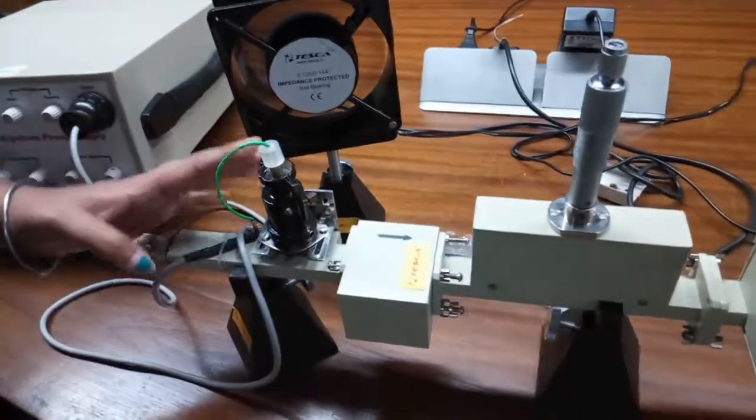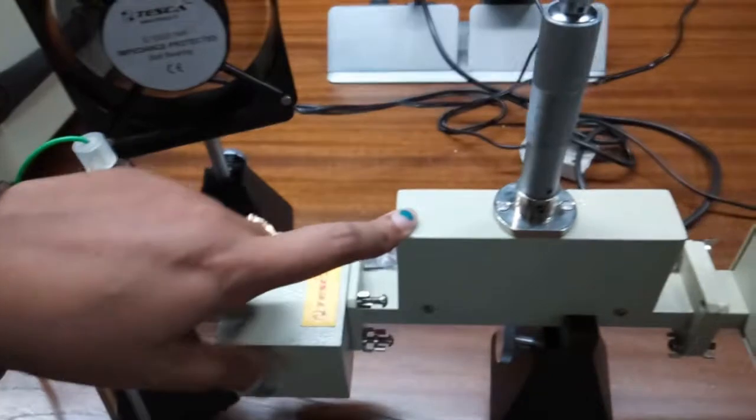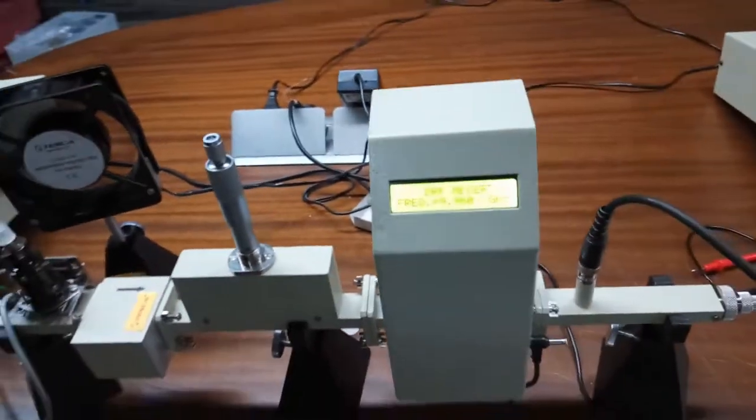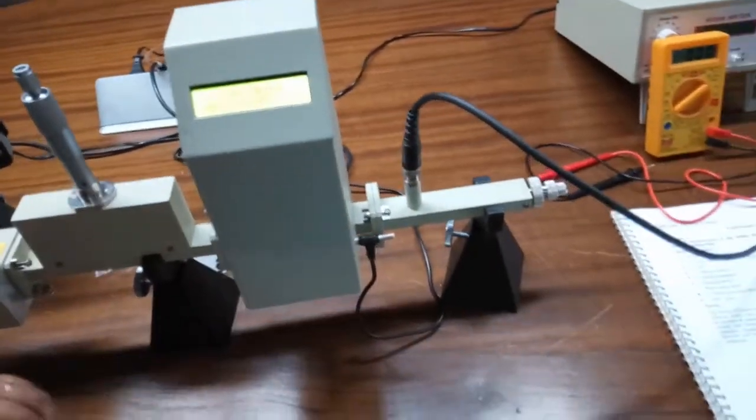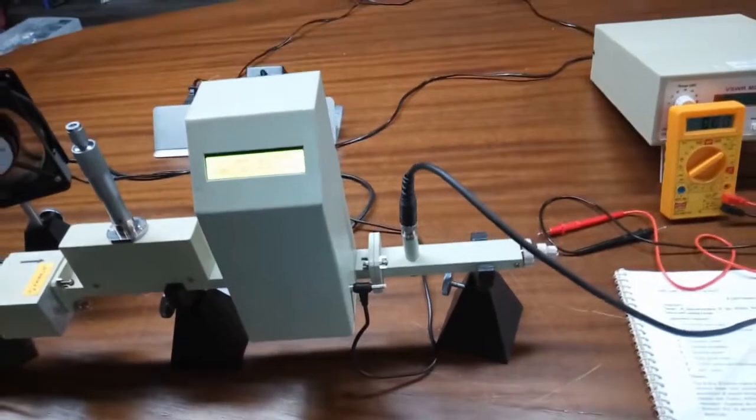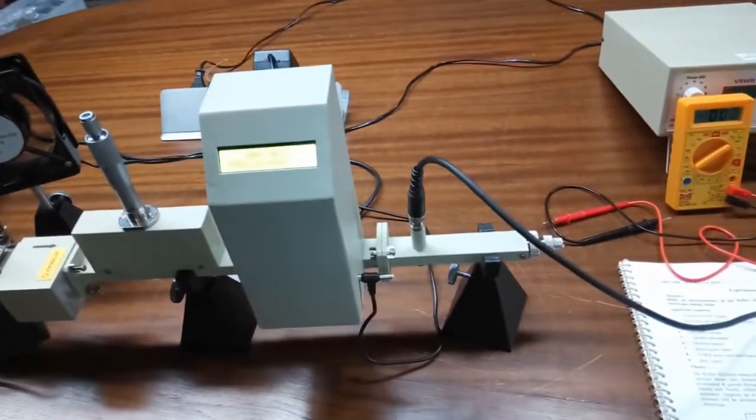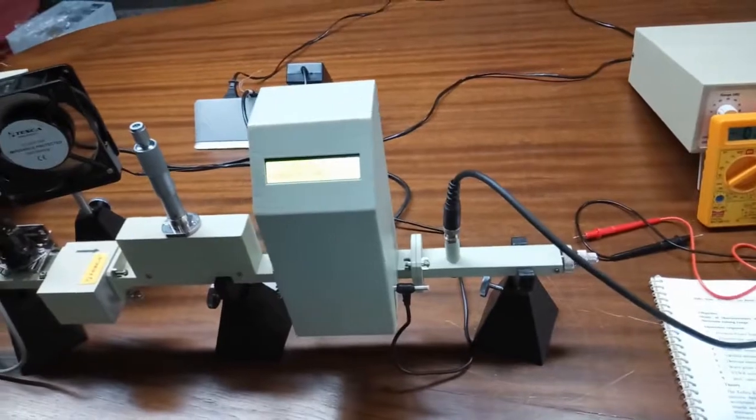We have the crystal mount, isolator, variable attenuator, DRF digital frequency meter, and detector mount. To observe the waveform we are using a CRO here. You can also use VSWR in place of CRO.